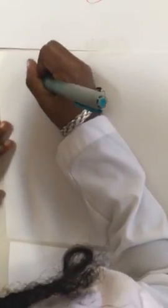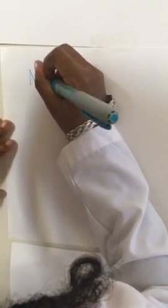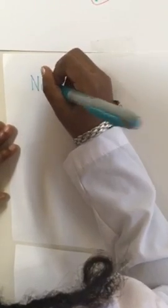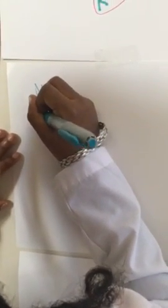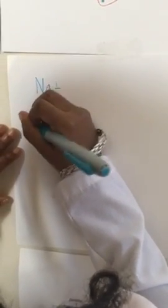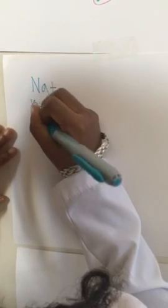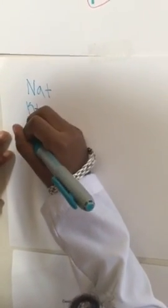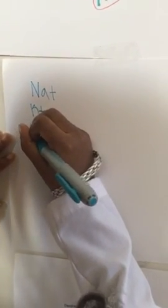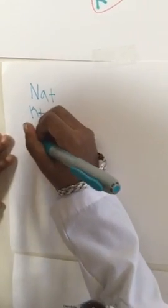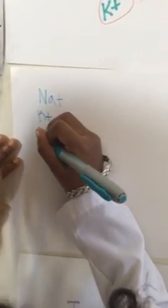So let's get started. To understand the action potential, you have to know the four major players, which are sodium, potassium, calcium, and the neurotransmitter acetylcholine. A what? A neurotransmitter acetylcholine. Okay.